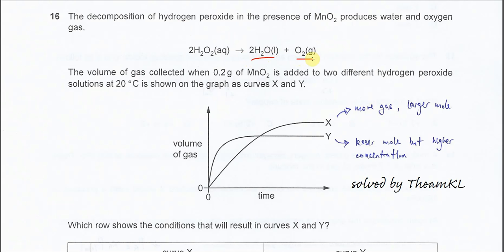In this question we measure the volume of gas produced over time. The volume of gas collected when 0.2 gram of MnO2 is added to two different H2O2 solutions at 20 degrees C is shown on the graph as curves X and Y.